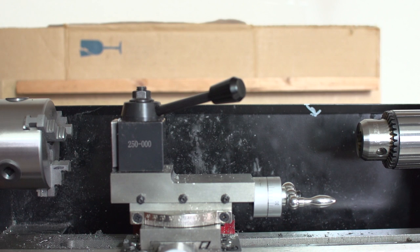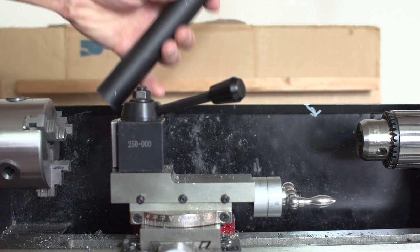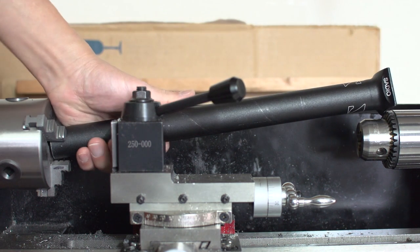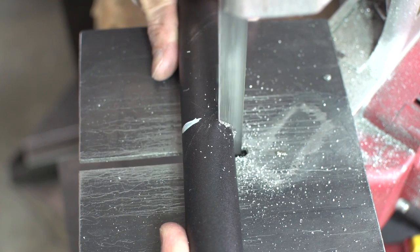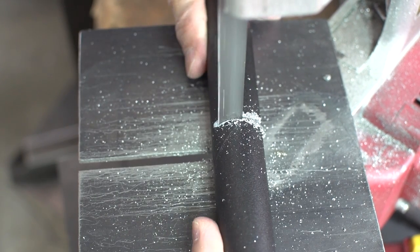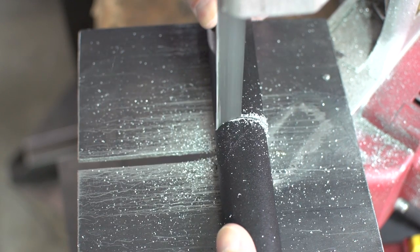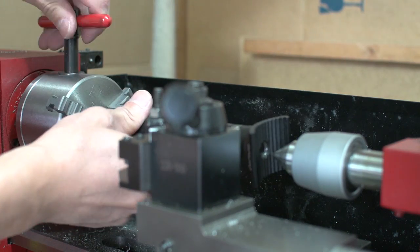Because I'm not reaming my seat tube, I'm going to need to turn this seat post down to diameter. So I'll need to get it in the lathe. That's better.